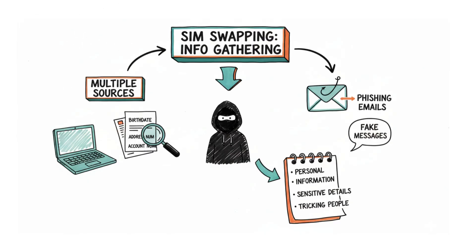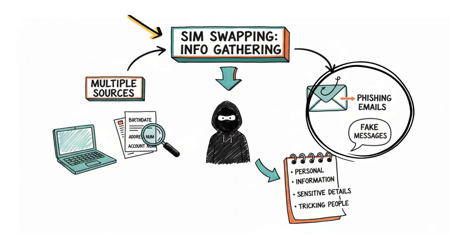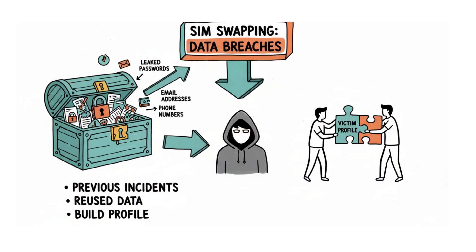Before a SIM swap occurs, attackers carefully prepare by gathering personal information about the victim from multiple sources. They often use phishing techniques, sending fake emails or messages designed to trick people into revealing sensitive details such as birth dates, addresses, or account numbers. In many cases, attackers rely on data breaches where leaked passwords, email addresses, and phone numbers from previous incidents are reused to build a victim profile.